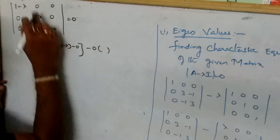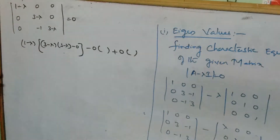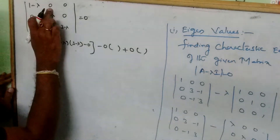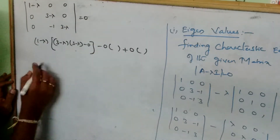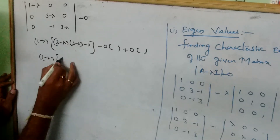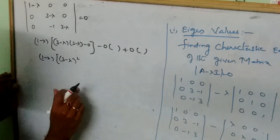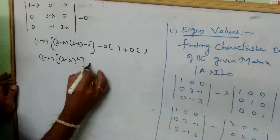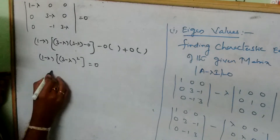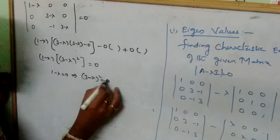The other terms become zero because of the zero entries. So we simplify to: (1 minus lambda) times (3 minus lambda) squared equal to 0.